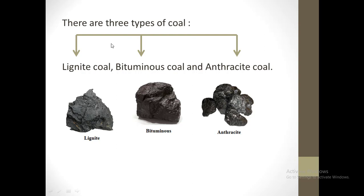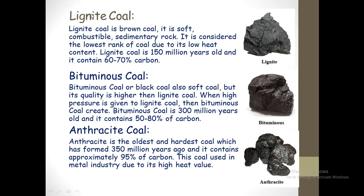In our country, we find three types of coal: lignite coal, bituminous coal and anthracite coal. Lignite coal is brown coal. This coal is soft and combustible, and also a sedimentary rock. It is considered the lowest rank of coal due to its low heat content. Lignite coal is 150 million years old and it contains 60-70% carbon.